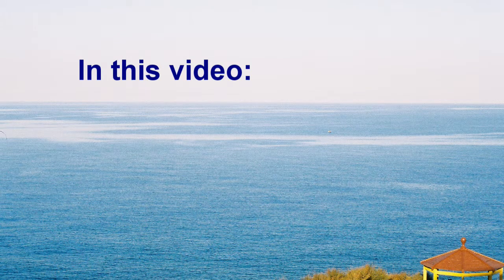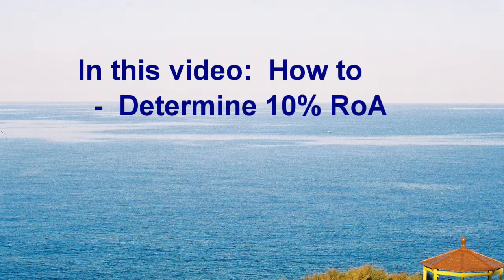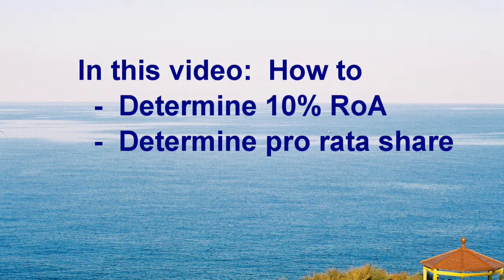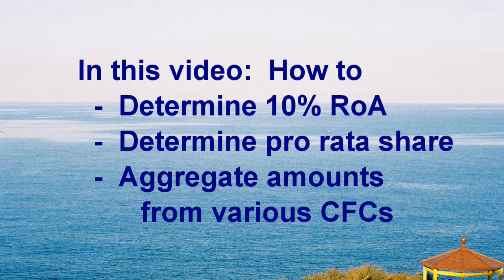In this video, I'll cover the following: how to determine the 10% return on assets; how to determine the shareholder's pro-rata share of income and assets — this is based on actual ownership without attribution rules; and finally, how to aggregate amounts from the various CFCs in which the U.S. person owns 10% or more.